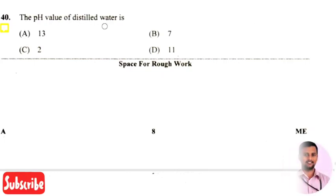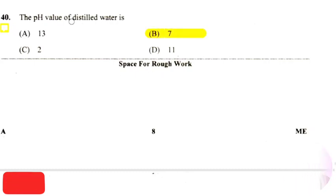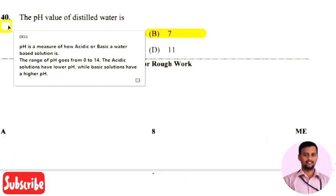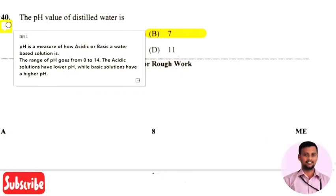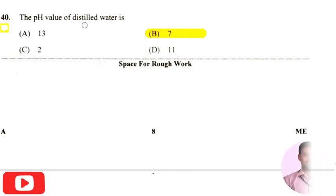The last question in this applied science section is: the pH value of distilled water is — the right answer is option two, that is seven. pH is a measure of any water-based solution indicating how acidic or basic it is. The range of pH goes from zero to 14; acidic solutions have lower pH values whereas basic solutions have higher pH values. Distilled water has a pH value of seven.